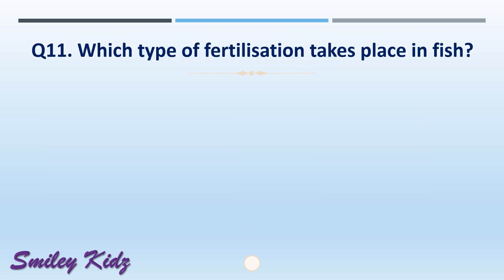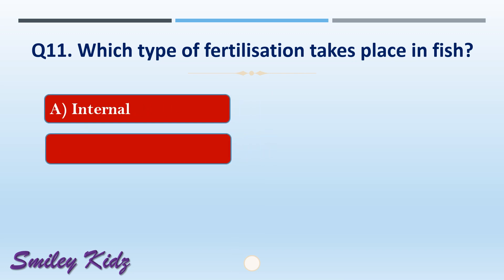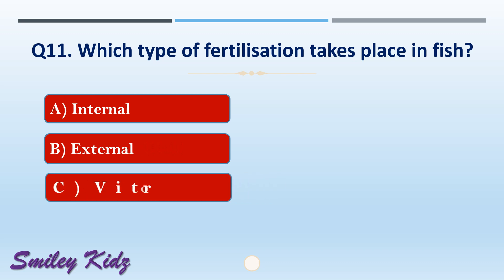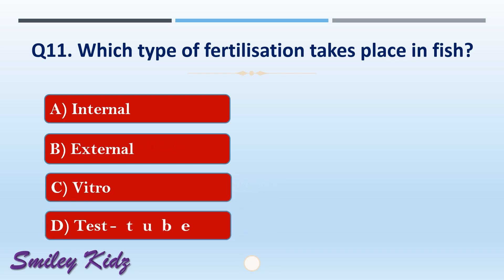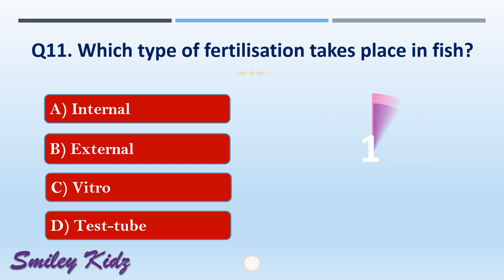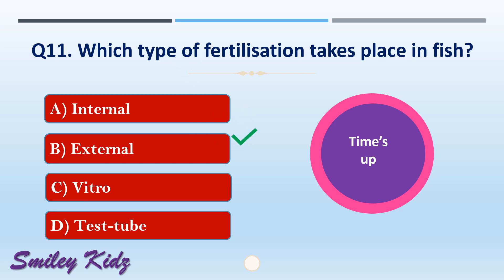Question number eleven: which type of fertilization takes place in fish? The options are: A) internal, B) external, C) vitro, or D) test tube. The right answer is option B, external. External type of fertilization takes place in fish.